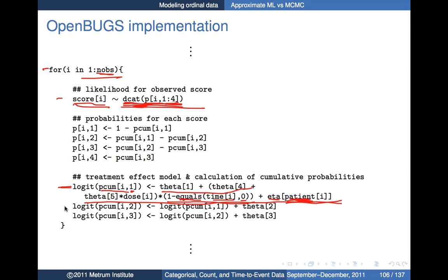That takes care of the probability that the score is greater than or equal to one. To get the remaining terms — greater than or equal to two, greater than or equal to three — I add on the additional components theta 2 and theta 3, which represent the differences between subsequent intercepts.